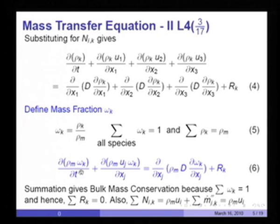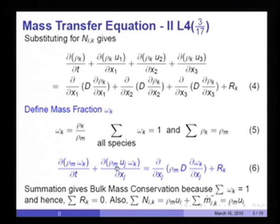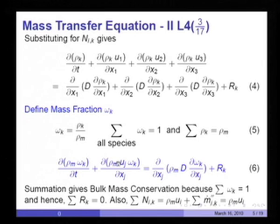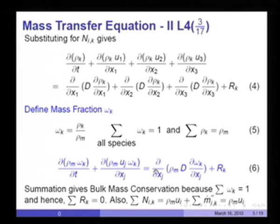If we sum each term over all species, this term reduces to dρ_m/dt. The convection term reduces to d(ρ_m·u_j)/dx_j because Σω_k = 1. Since Σω_k is constant, the diffusion term simply vanishes. The resulting equation is dρ_m/dt + d(ρ_m·u_j)/dx_j = Σr_k, and that term is zero. The left-hand side is simply the bulk mass conservation, which equals zero. It follows therefore that Σr_k must equal zero.